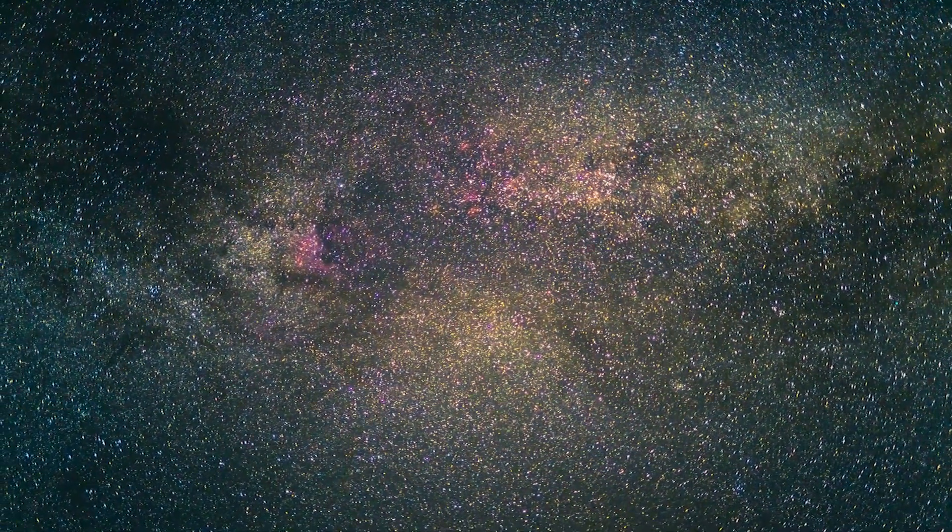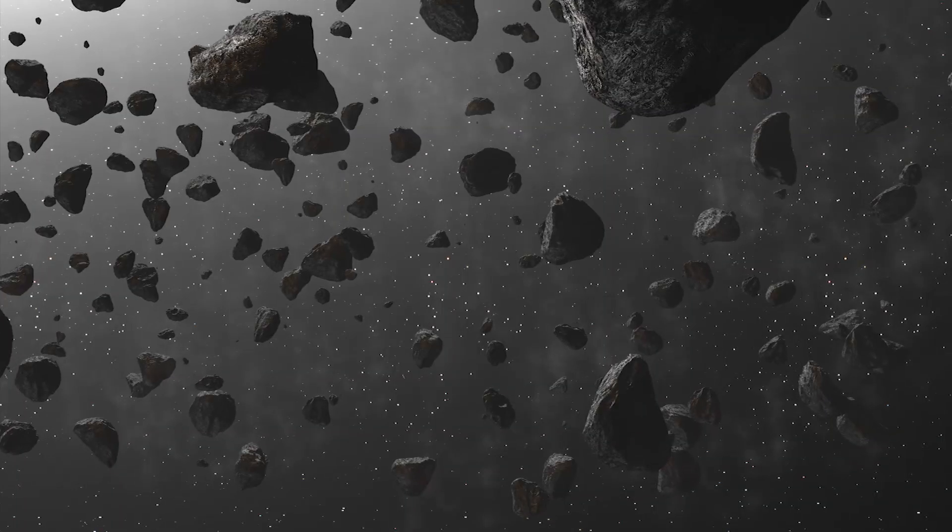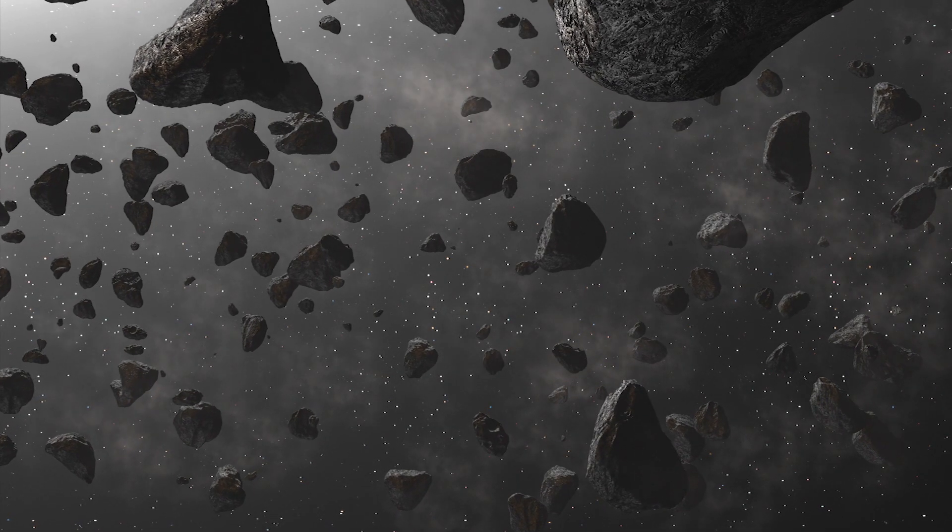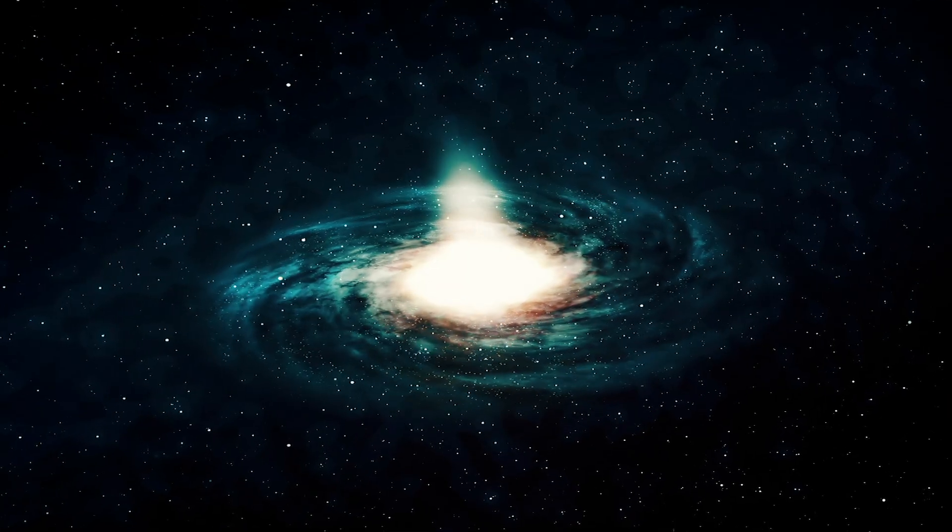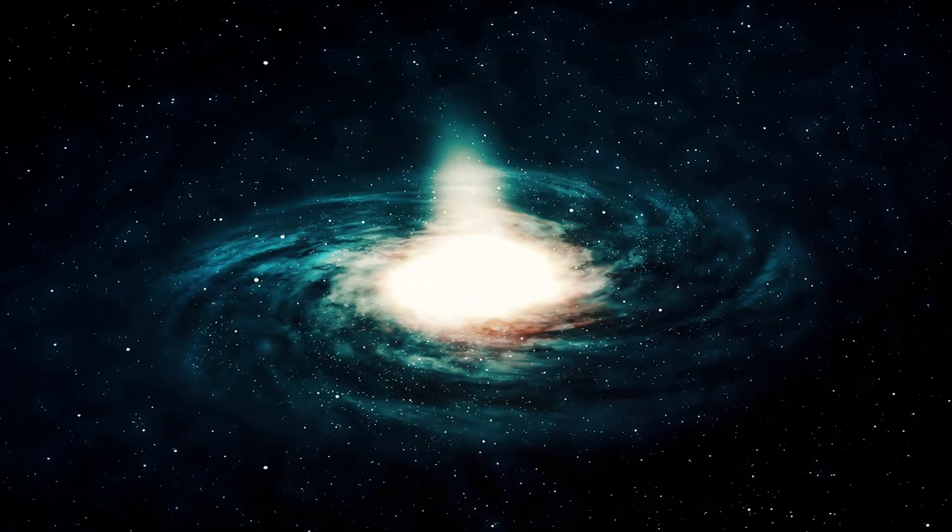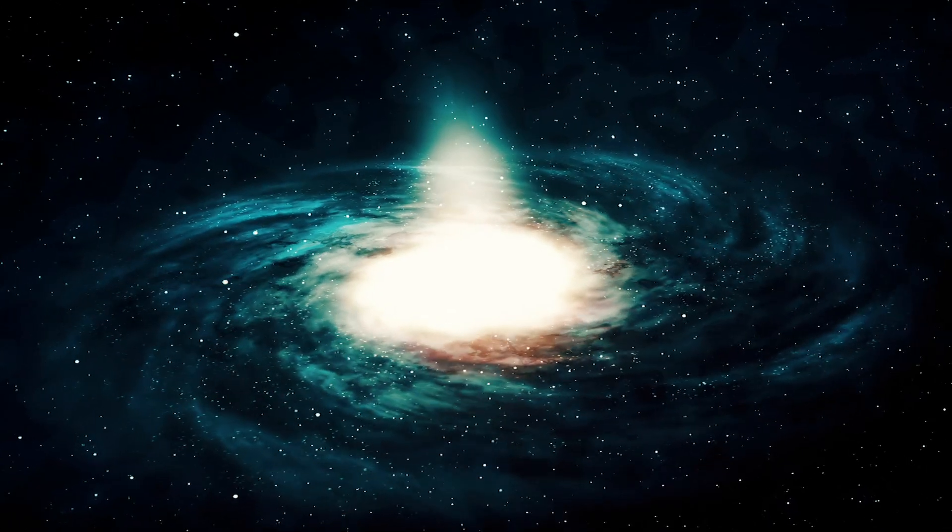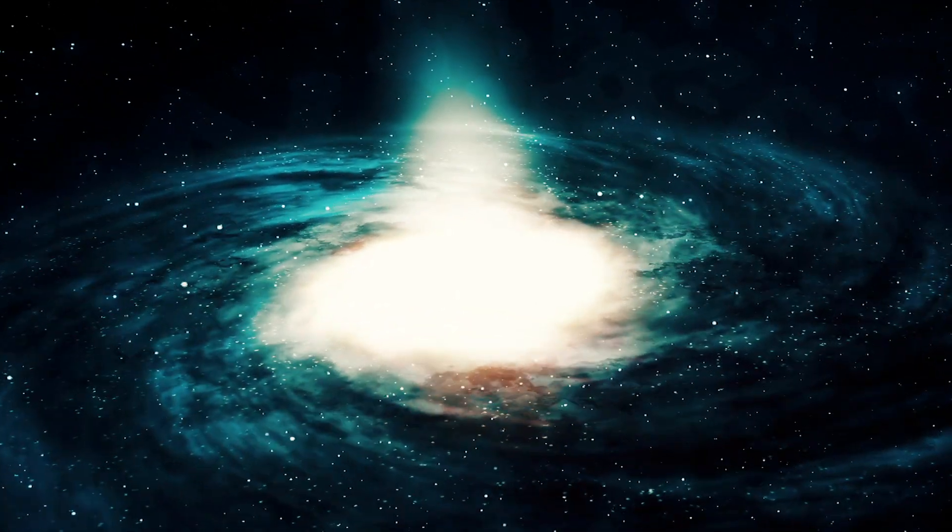Observations have shown us that the amount of visible matter is far too small to produce the gravity that is pulling things around. Galaxies in particular appear to be twirling too fast to hold themselves together.